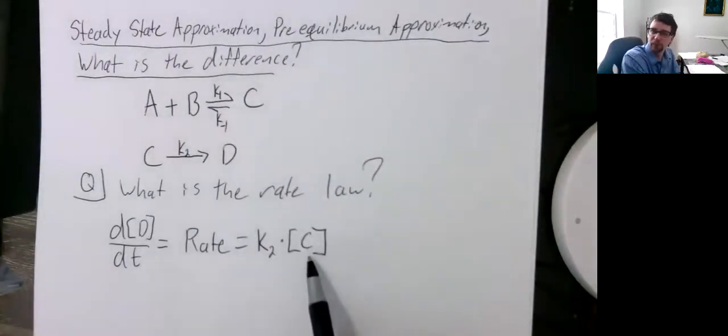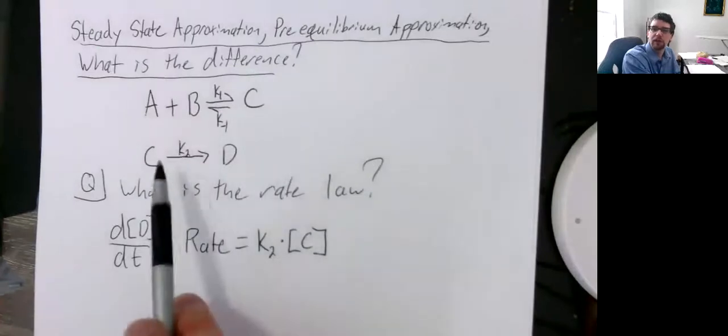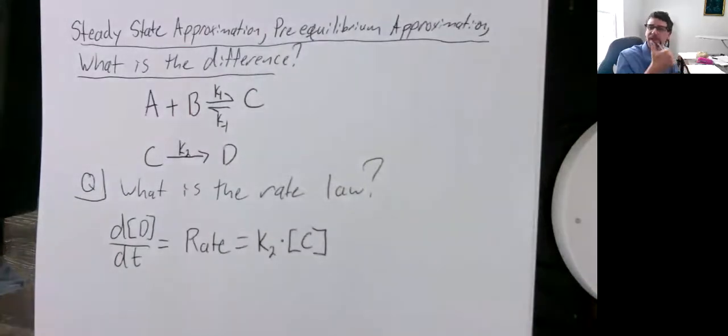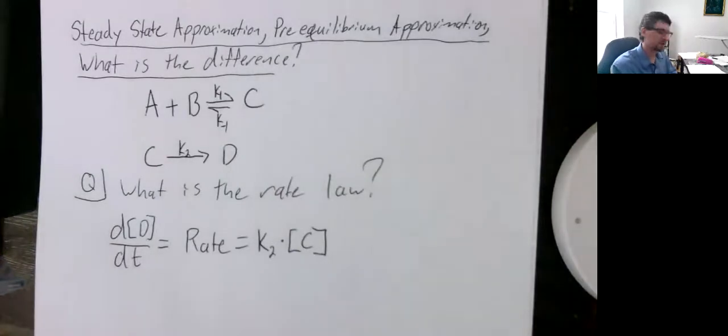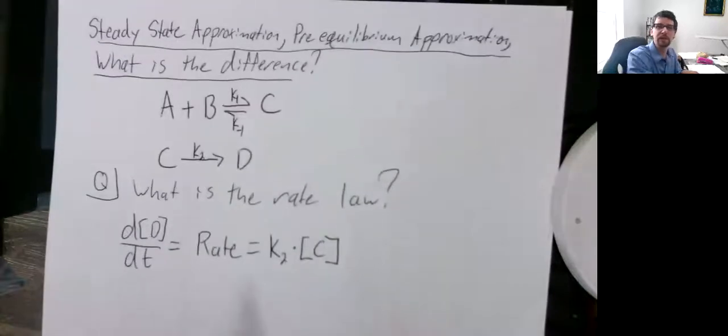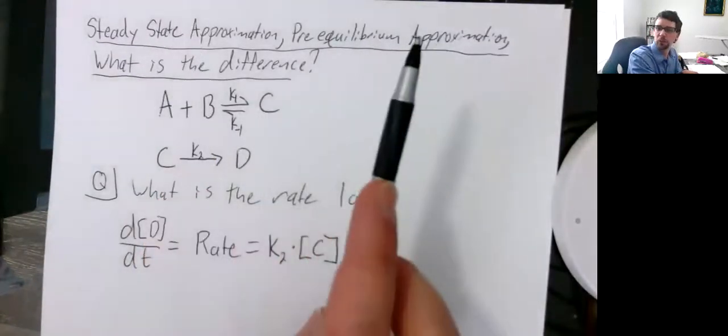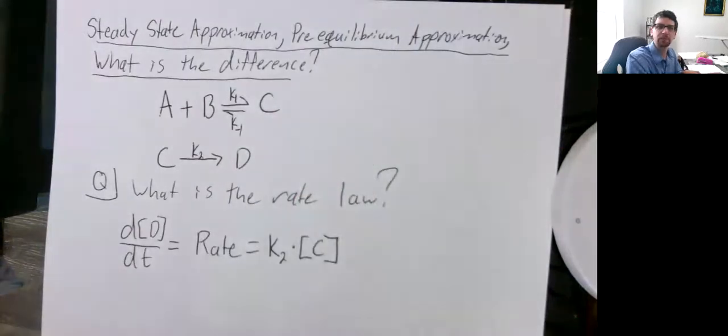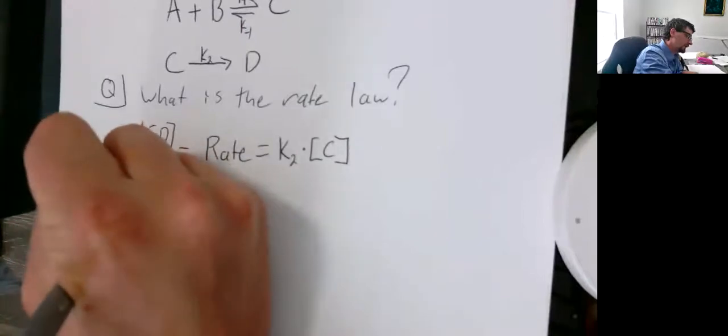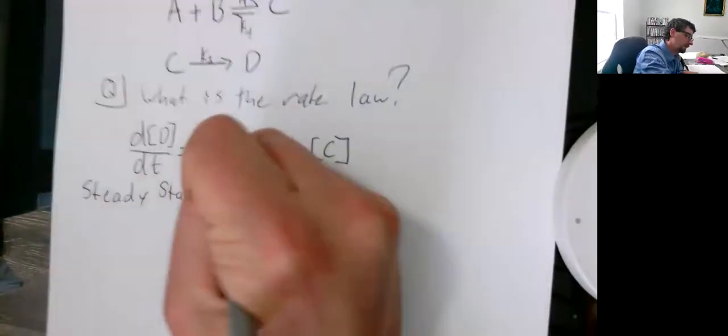C is what's known as an intermediate. As it's being produced, it's also being consumed in these sets of reactions. Intermediates tend to be short-lived, and they tend to be really difficult to measure. You can do it if you trap them, but that's also pretty difficult to do. So what can we do? This is where we either have to make a steady state approximation or a pre-equilibrium approximation. Let's start with the steady state approximation.